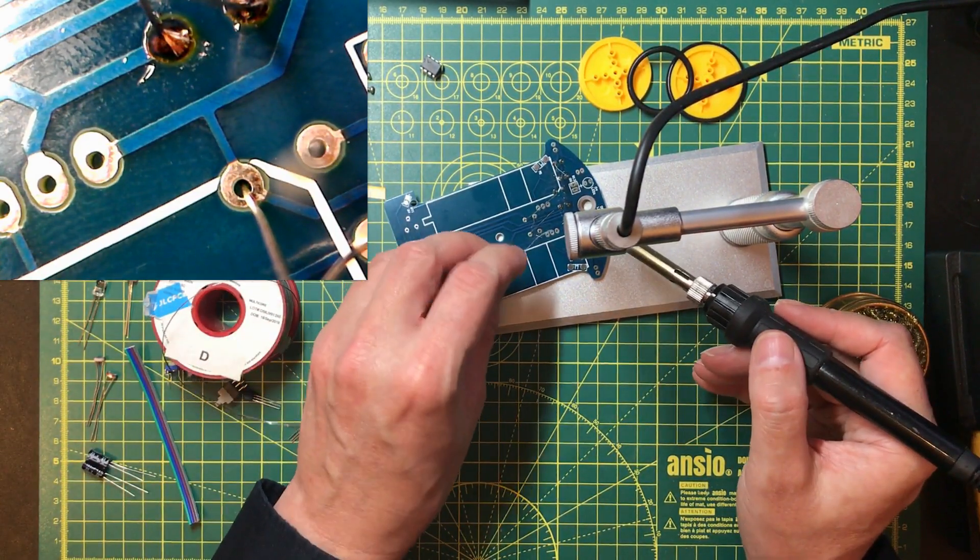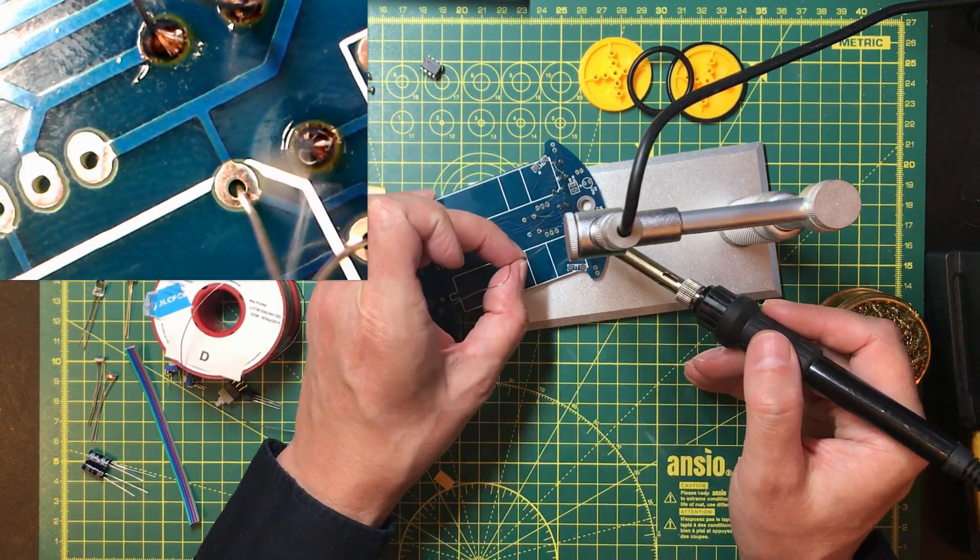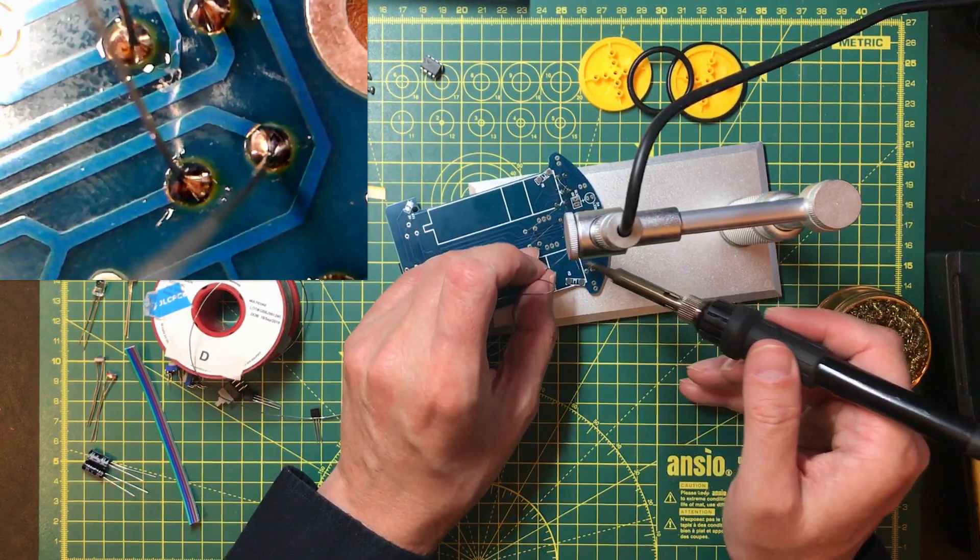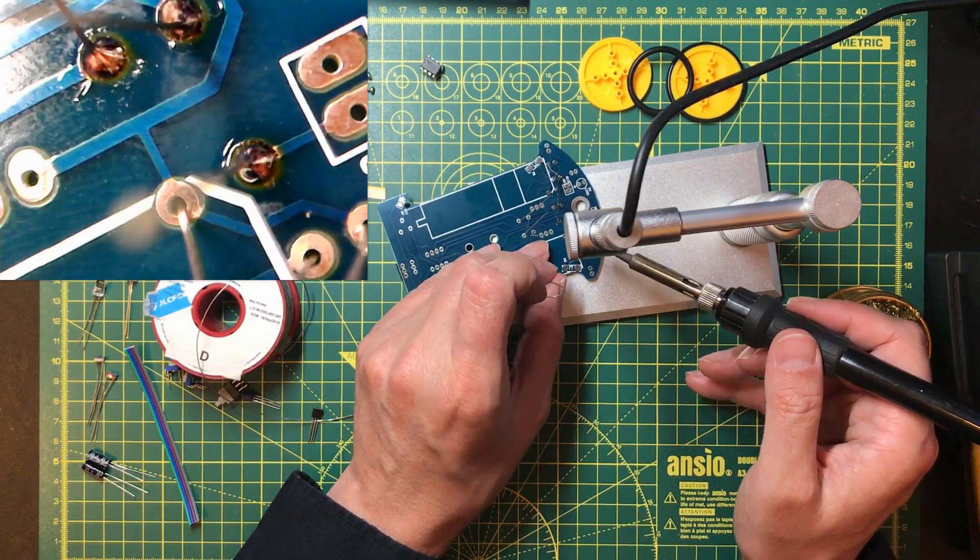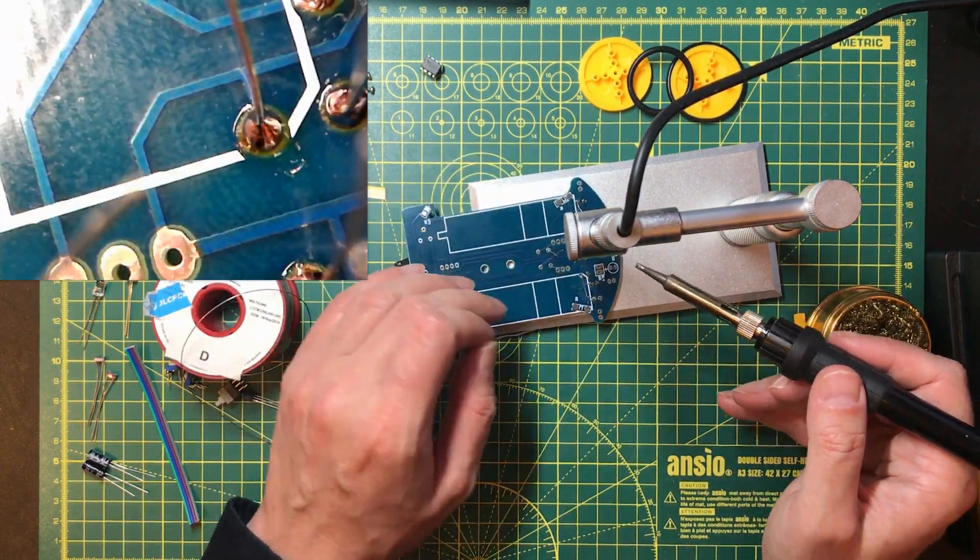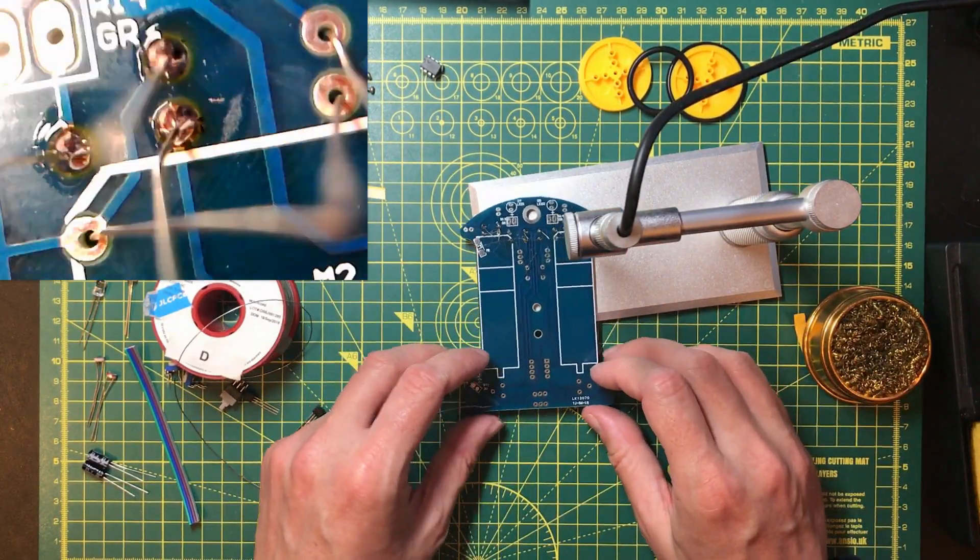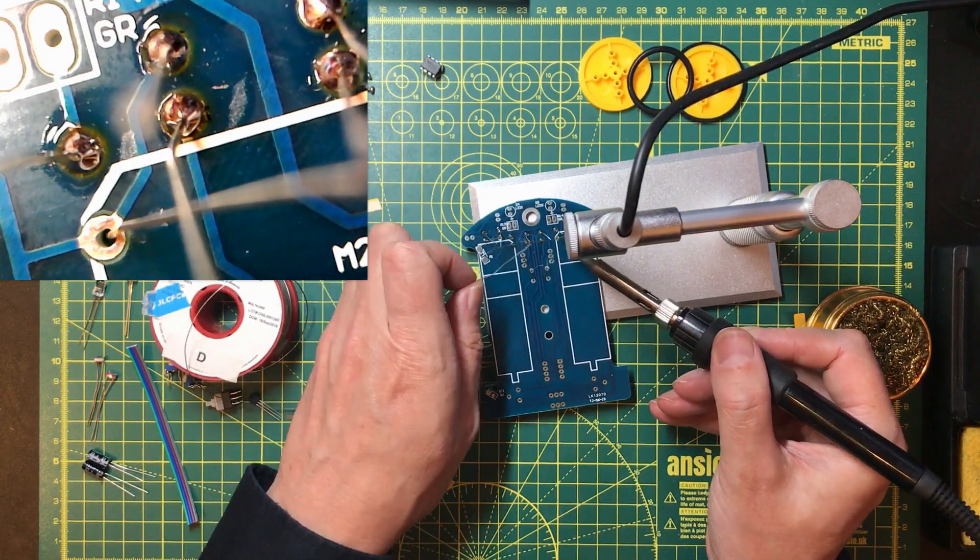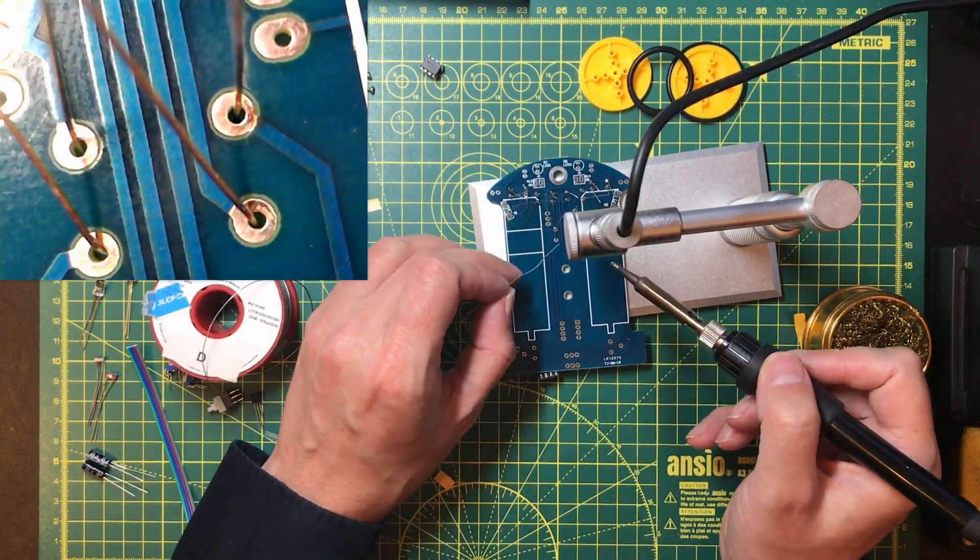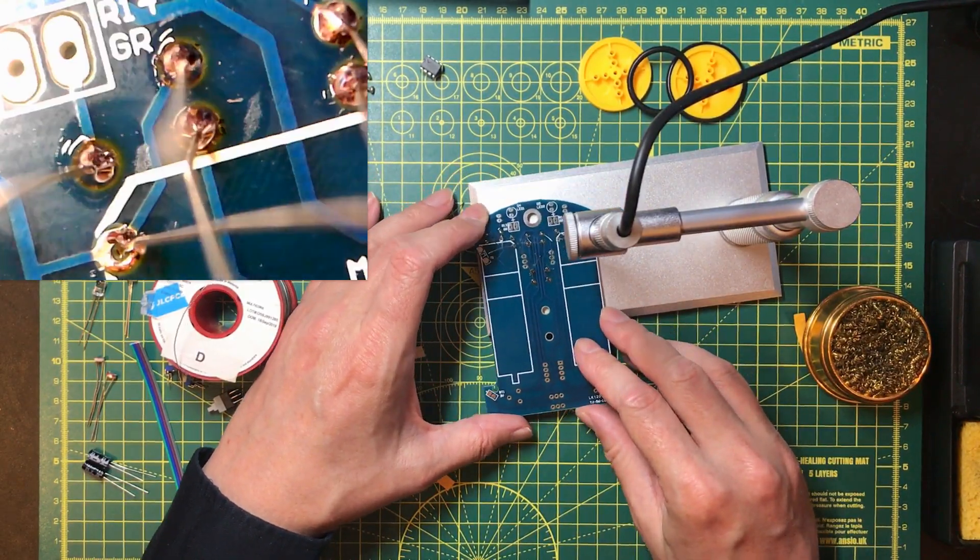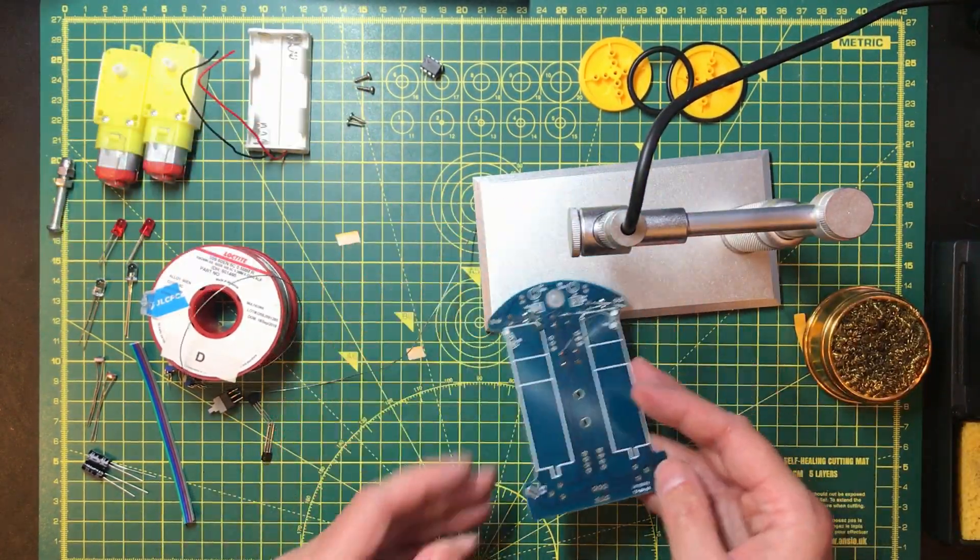This kind of through-hole soldering is very straightforward. It's an absolute joy to do, to be honest, compared to some of the surface mount stuff I've been attempting recently. All right, is that everything? Looks good.